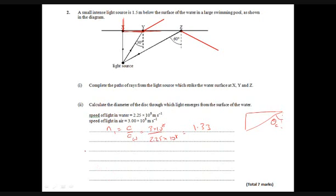So the next job is to work out the critical angle. So sine theta c equals 1 over n equals 1 over 1.33. So theta c equals the sine minus 1 of 1 over 1.33. And that gives you a critical angle of 48.6 degrees.